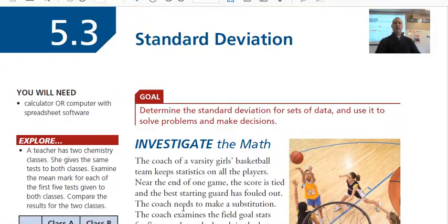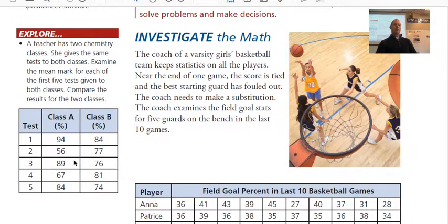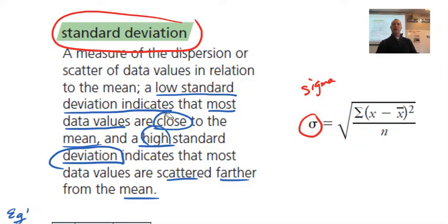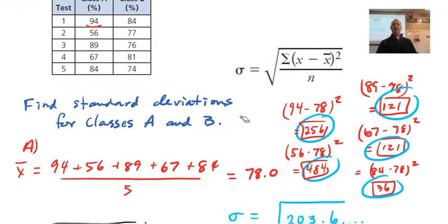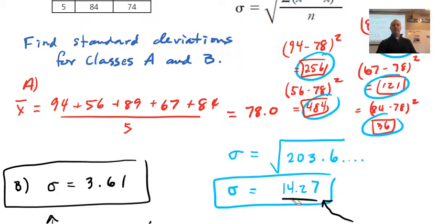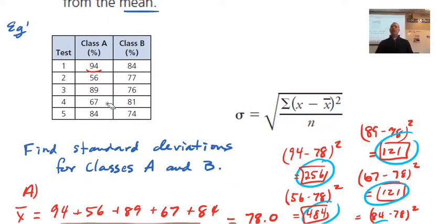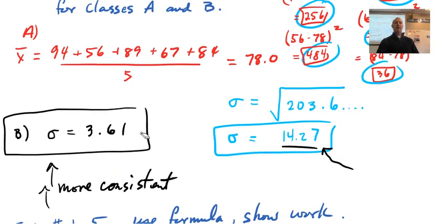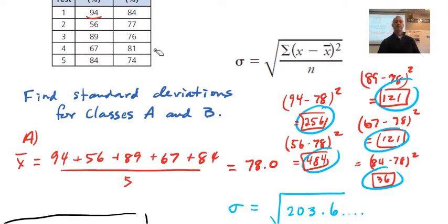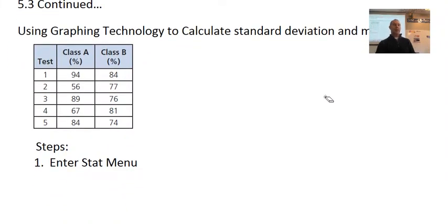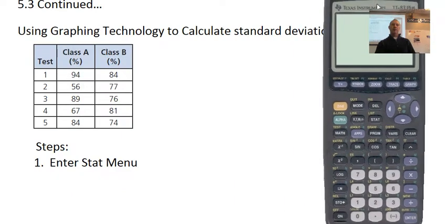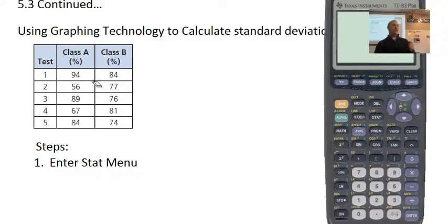We are going back to 5.3 and taking a look at the data from yesterday. Do you remember we did Class A and Class B with the manual method? For A, we found that the standard deviation was 14.27 — so the spread on average is about 14 percent from the mean. For B, after calculation it was quite a bit smaller, meaning that data is grouped much closer together. We need to know how to use this formula, but today we're working with graphing calculators to verify we get the same numbers.